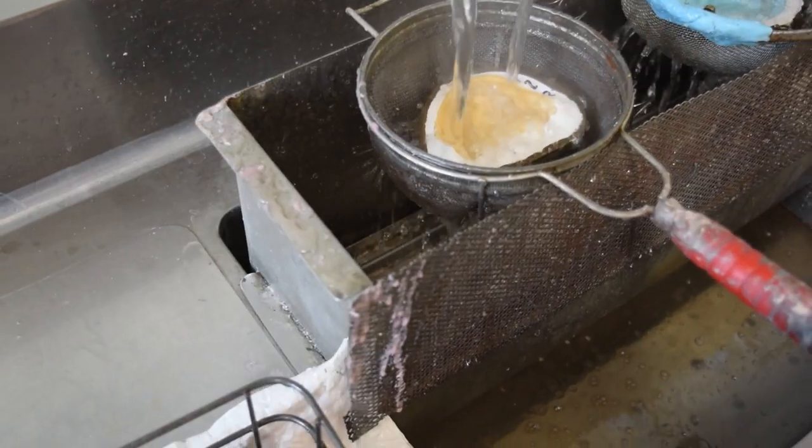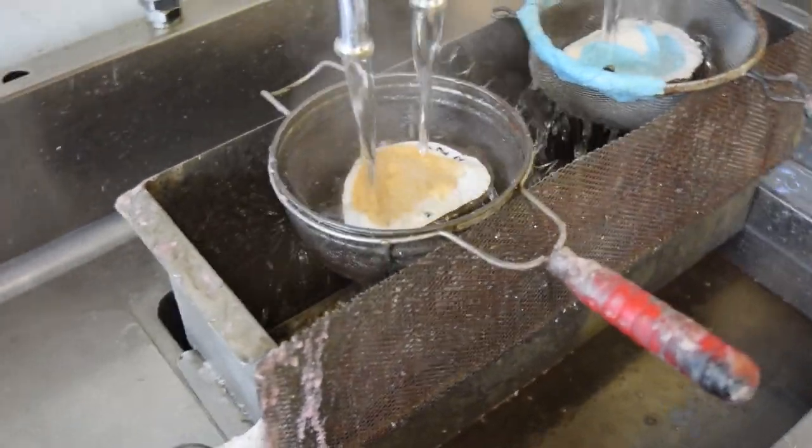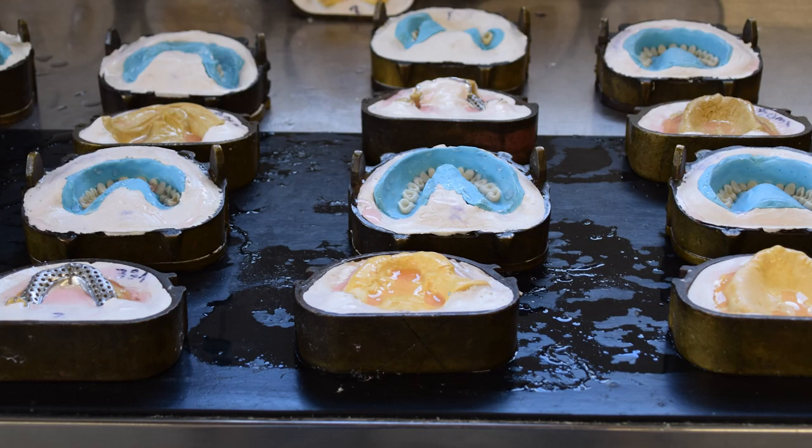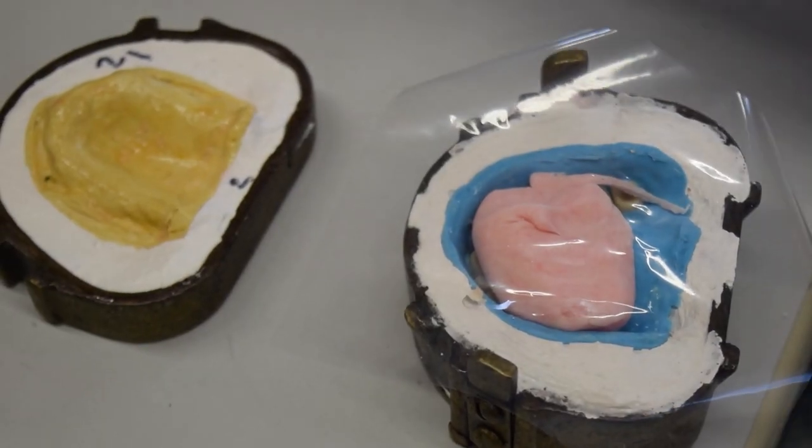Lusitone 199 acrylic powder is prepared and the denture mold is filled. Pressure is applied to the mold to ensure it is completely filled before the denture is placed in a hot water bath to cure.